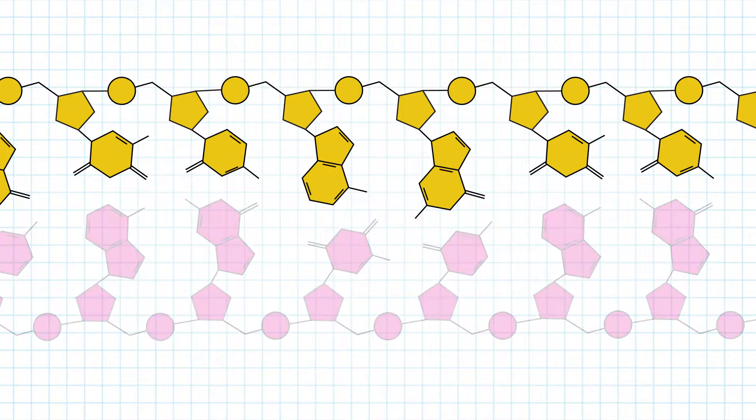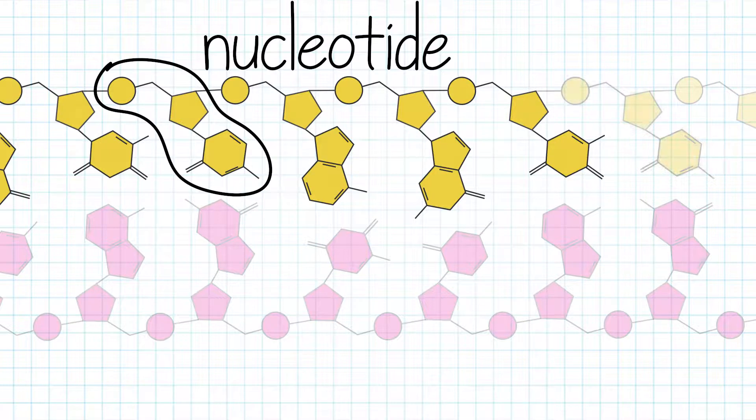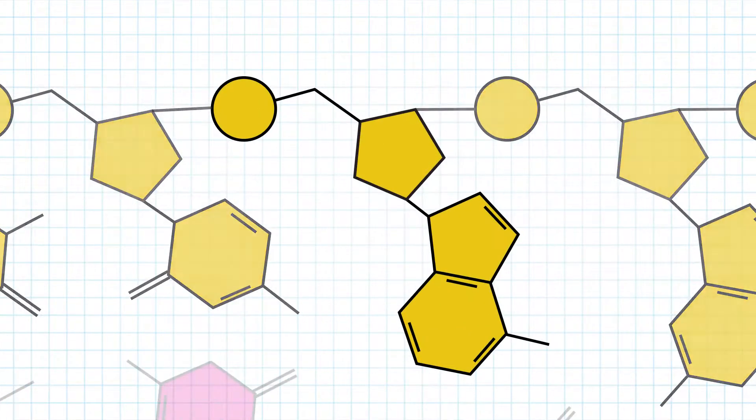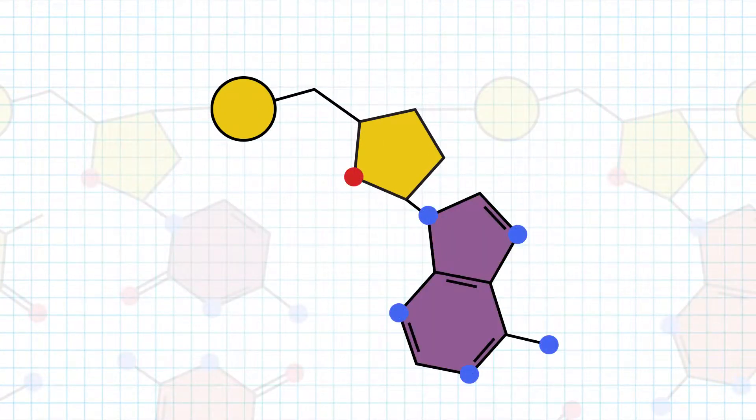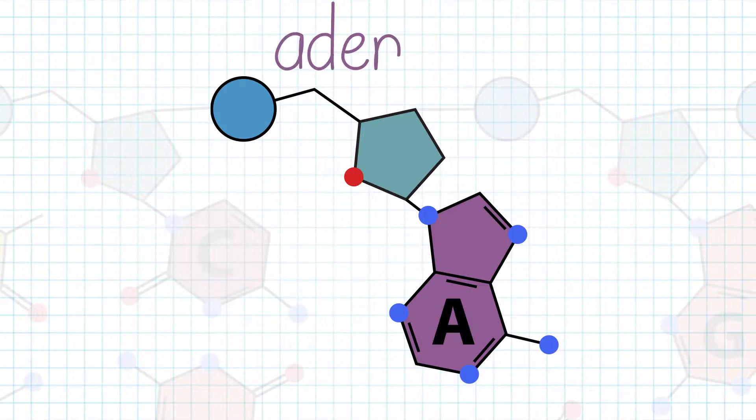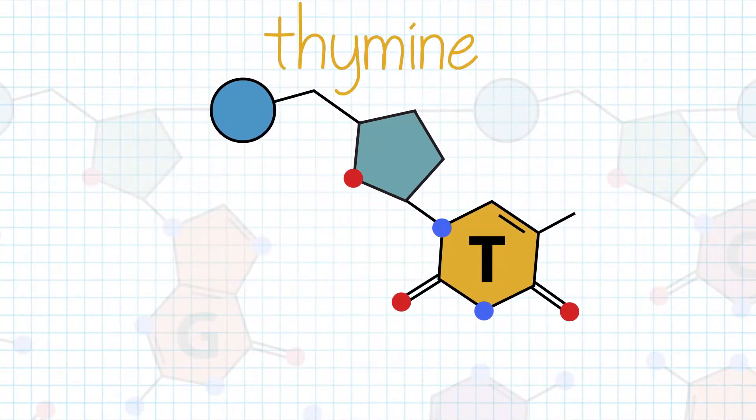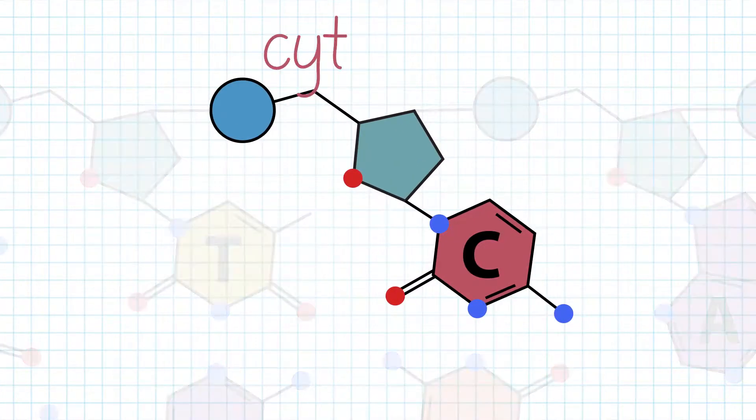Each strand is a polynucleotide, meaning the strand is made up of many individual units called nucleotides. A nucleotide has three components: the 5-carbon sugar, a phosphate group, and one of four possible nitrogenous bases—adenine, guanine, thymine, and cytosine.